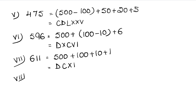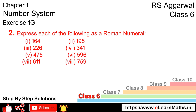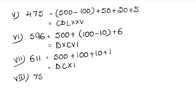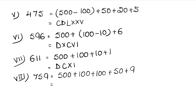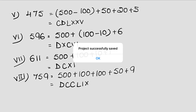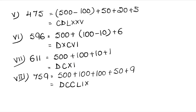Let's do the last part now. The last part is 759, written as 500 plus 100 plus 100 plus 50 plus 9. That gives us 700 plus 50 plus 9. So the answer is DCCLIX.